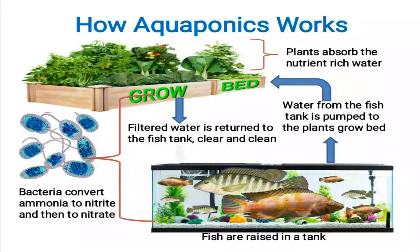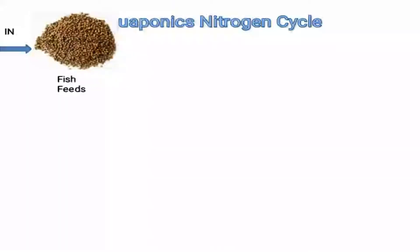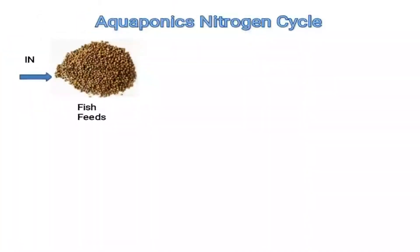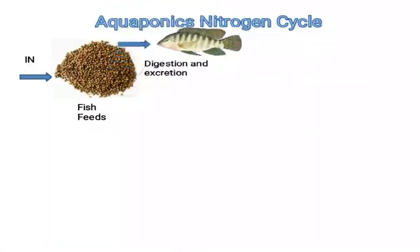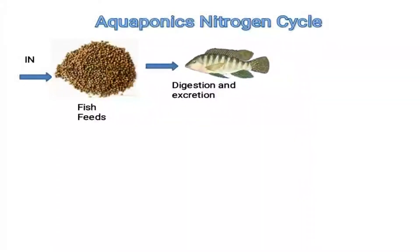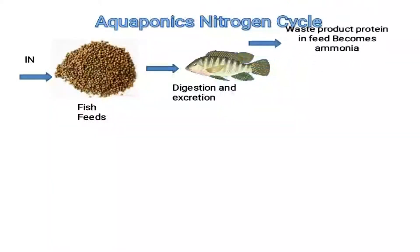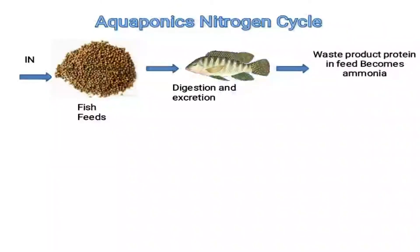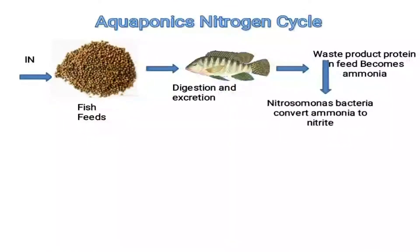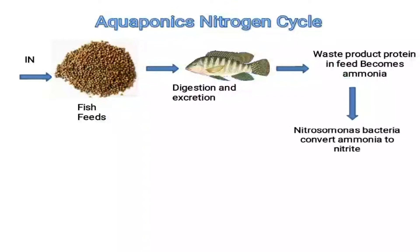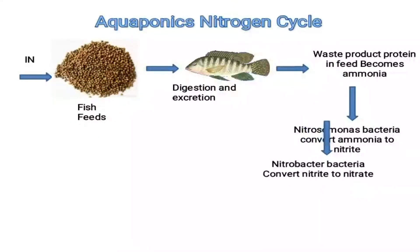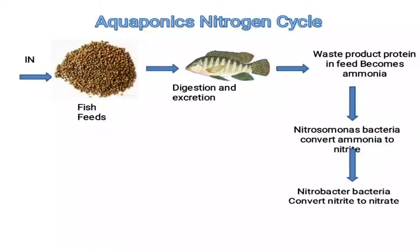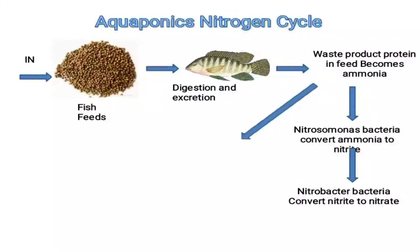Ang halaman ngayon ay kumakain sa mga dumi ng isda — na nafilter na yung tubig. Ang filtered water o tubig ay binabalik naman sa fish tank, so yung tubig na bumabalik sa fish tank ay malinis na at kaaya-aya sa mga isda. Ito ang nitrogen cycle sa ating aquaponics system. Una, pinapakain natin ang mga isda, at yung pagkain na kinakain ng mga isda ay pinoproduce ng mga isda bilang dumi. Yung mga dumi na naproduce ng mga isda ay mayaman sa ammonia, at yung ammonia ay kinakain ng unang bakteriya na ang tawag ay Nitrosomonas.